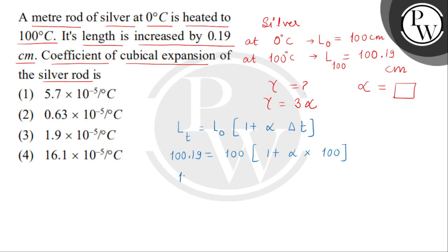So 100.19 equals to 100 distributed plus alpha multiplied by 10 to the power 4. We get left side 0.19 and this is divided by 10 to the power 4 is the value of alpha. So we get 1.9 multiplied by 10 to the power minus 5 per degree Celsius.